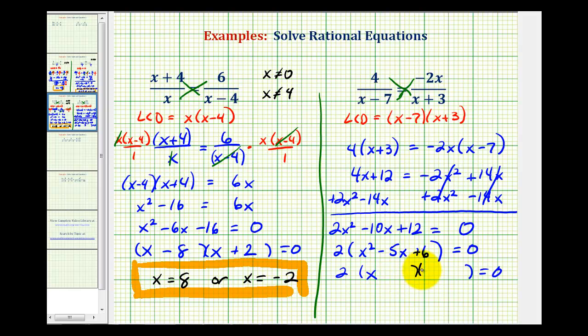Here, we have x and x, the factors of 6 that add to negative 5 are negative 3 and negative 2. So it appears our solutions are x equals 3 or x equals 2.